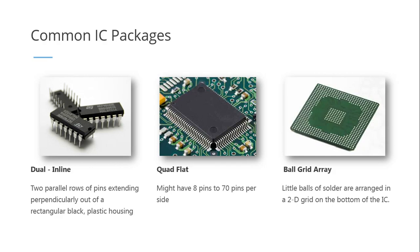Another way to classify ICs is by their type of packages. For through-hole mounted style, we usually have what we call the DIP or Dual Inline Package. One of its defining characteristics is that it has two parallel rows of pins extending from the left and right sides. Normally it is black in color and encased in a black plastic housing, with the serial number or IC type printed on top.